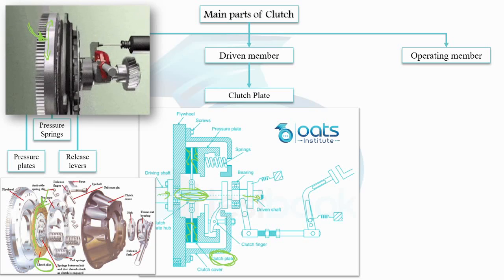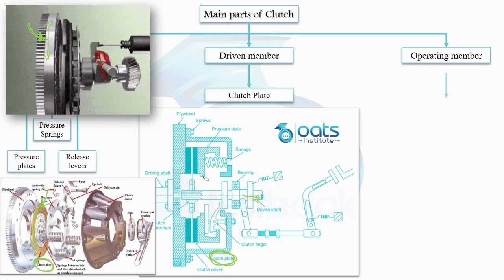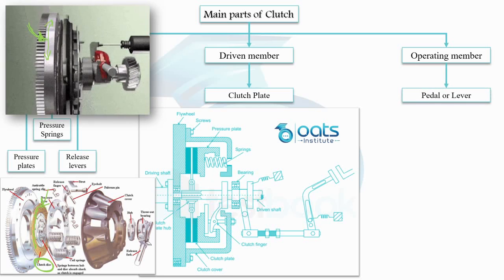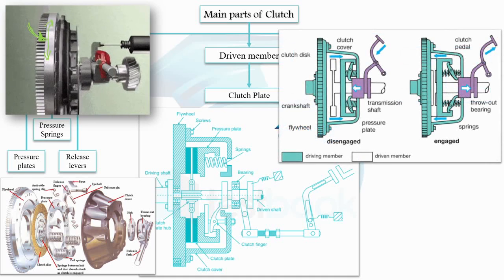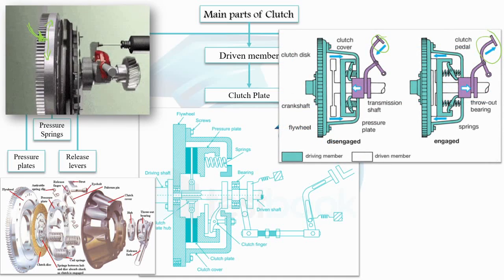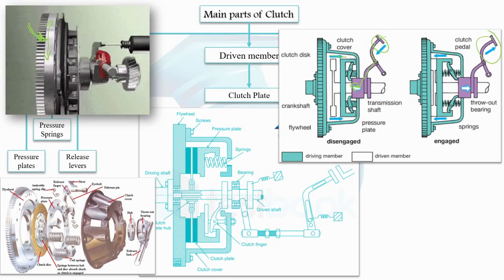Now, lastly, we have the operating member. The operating member enables us to control the clutch engagement and disengagement. This member typically takes the form of a pedal or lever that can be pressed by the driver. By applying pressure on the operating member, we can disengage the driving and driven plates effectively, interrupting the power transmission between the engine and the transmission system.